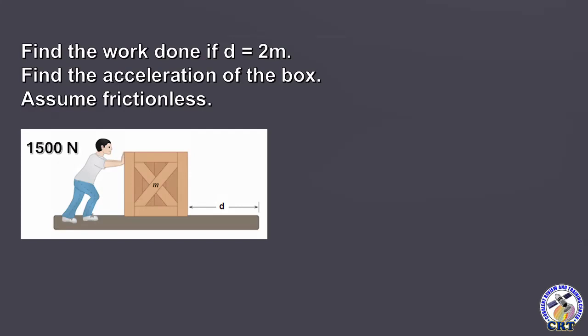For our first example, find the work done if d equals 2 meters, find the acceleration of the box, assume frictionless surface. For this kind of problem, let us take note that the horizontal force applied by this man is in level with the surface. So this is the force applied by the man on the box, and this is in parallel with the motion or the surface.